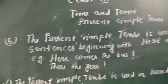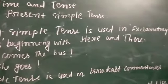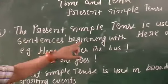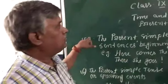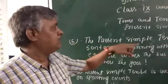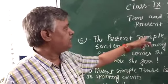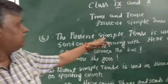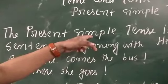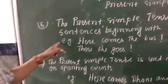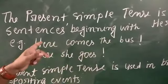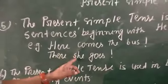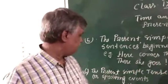The present simple tense is used in exclamatory sentences beginning with here and there. If we want to know this in Hindi, then here and there are exclamatory sentences. Here comes the bus. There she goes.